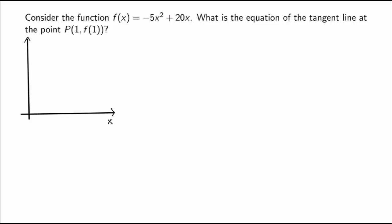The first thing you may want to do is sketch a graph of the function. This is a quadratic function, so the graph will be a parabola. Because the coefficient in front of x² is negative, it opens downwards. At x = 0, f(0) = 0, so it goes through the origin, and at x = 4, f(4) = 0 as well, so the parabola goes through (4, 0).